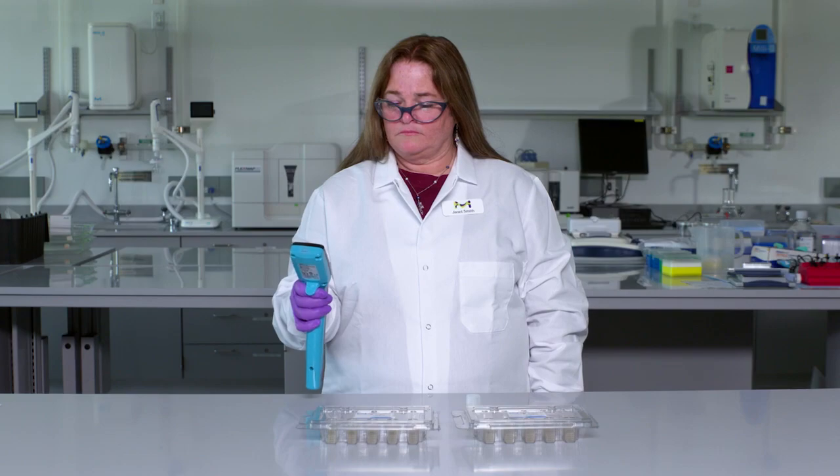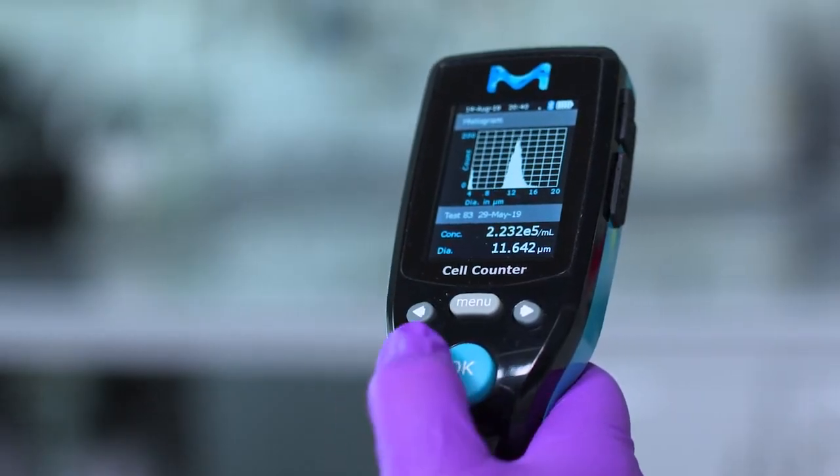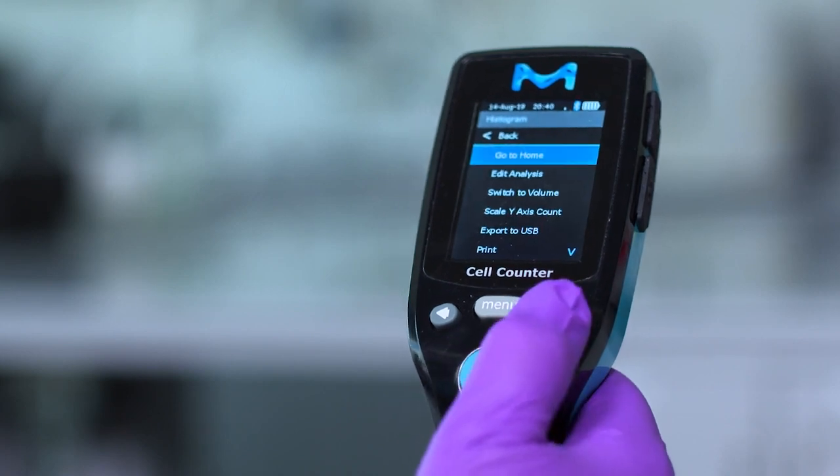There are two ways to gate. First, directly after histogram is generated, press the OK button and go to edit analysis.